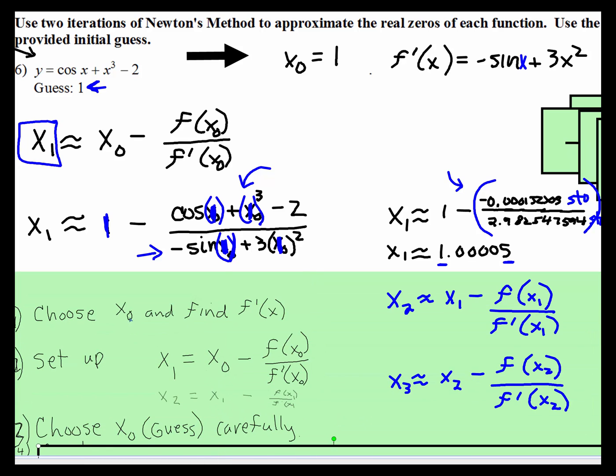So again, the steps: Choose your first guess. Also go ahead and find the derivative of the function. Set up the equation. Go ahead and plug in your first guess. And then look at what you have to do. Once you get your first guess, here's x1, that's what x1 is equal to. Now you're going to plug that into the equation to find the second guess.